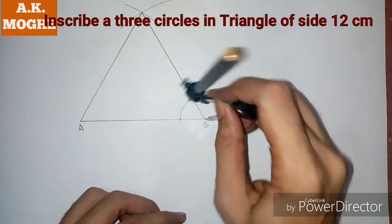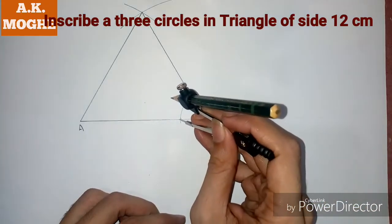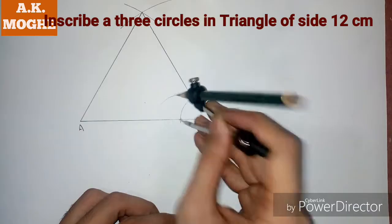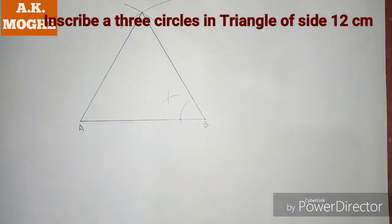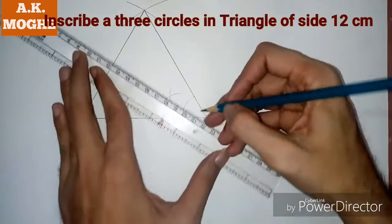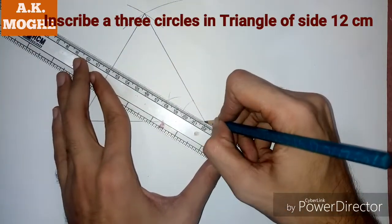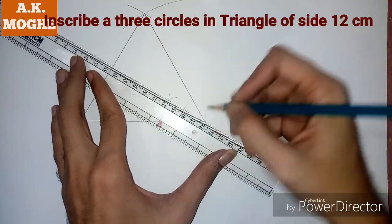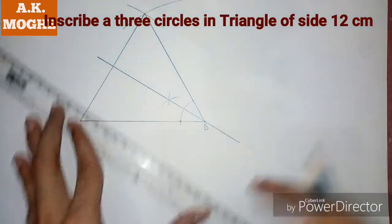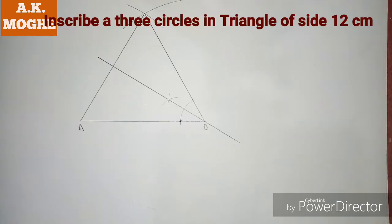Then bisect each and every angle of the triangle. Here I am bisecting angle B. Similarly I will bisect the angle here. Here angle B is bisected, then I will bisect the angle here.